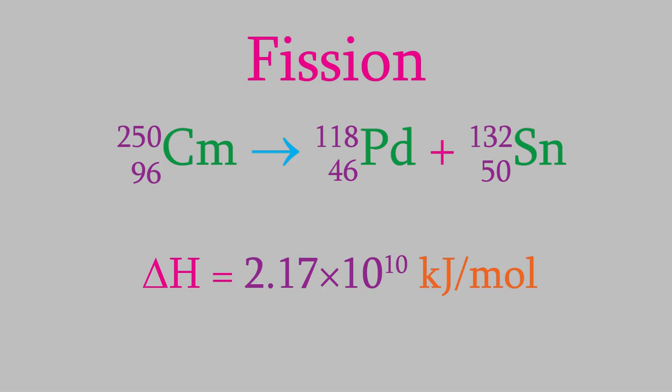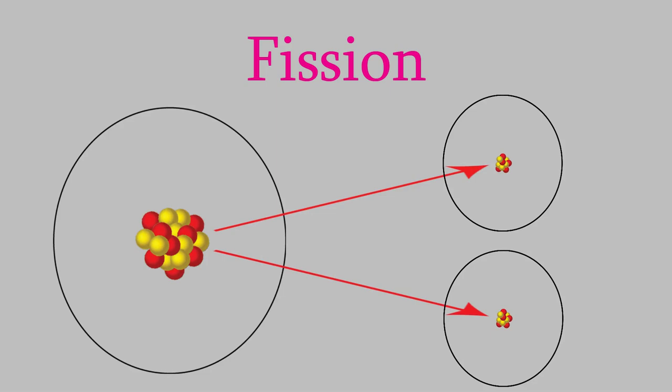In many fission reactions, when the reactant nucleus breaks apart, we get more than just the two smaller nuclei. Instead, many fission reactions also produce several neutrons. For example, the isotope californium-248 breaks up to produce a lead-208 nucleus, a sulfur-36 nucleus, and four neutrons. We use the symbol n for the neutrons, but how do we write the superscript and subscript? It turns out that neutrons and protons weigh nearly the same amount, about one amu. So the mass number of a neutron is 1.